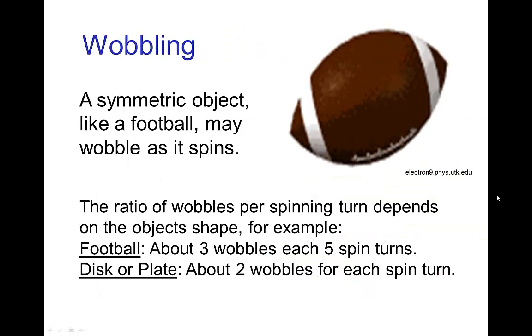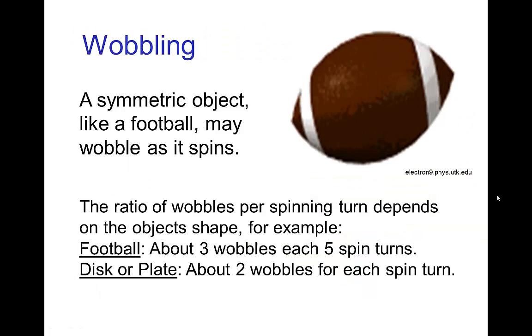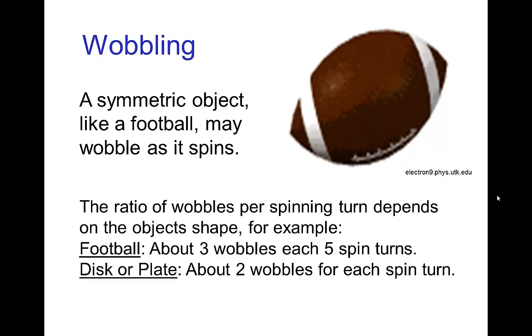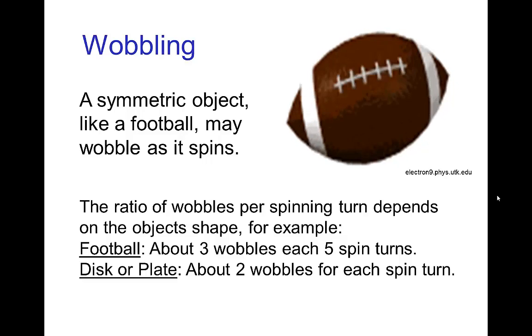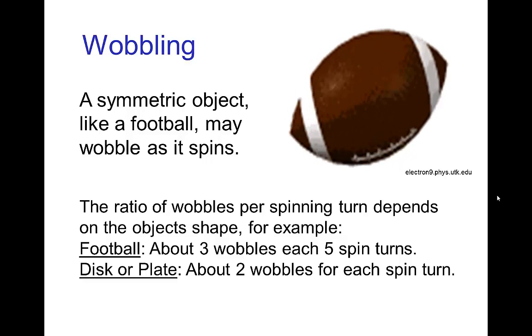Now, if we have an object that is symmetric, like a football, so the football has a long axis, but then around that axis the football is symmetric, then it doesn't tumble, but when it spins, it can wobble.